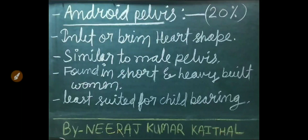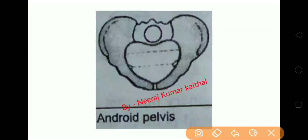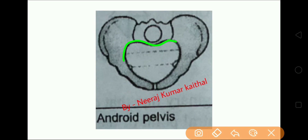The next pelvis type is android pelvis. It is found in 20 percent of women. This type of pelvis has an inlet or brim like a heart shape. This pelvis is similar to the male pelvis. Android pelvis is found in short and heavy-built women and is least suited for childbearing. As seen in the diagram, the android pelvis has a brim like a heart shape.